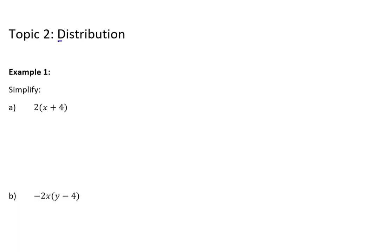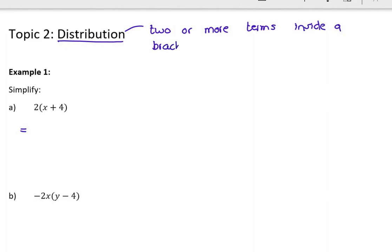This topic is about distribution. Now distribution is when you have two or more terms inside a bracket and all of those terms need to be multiplied by something outside the bracket. So: two or more terms inside a bracket that need to get multiplied by something outside the bracket.